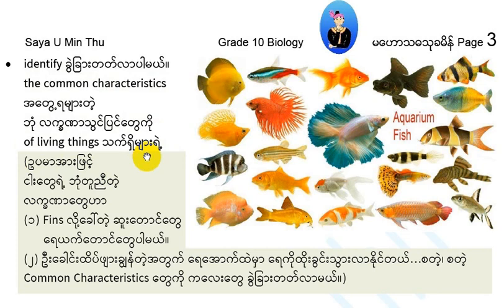The characteristics of living things are: cellular structure, metabolism, growth, movement, irritability, reproduction, and adaptability.